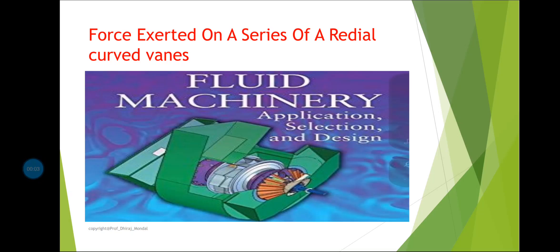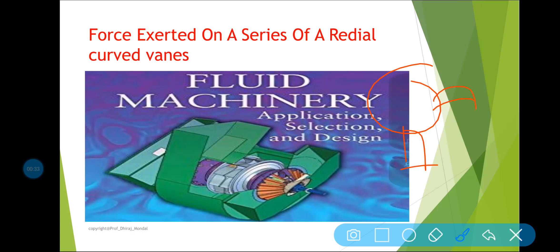Welcome students to this session of fluid machinery. Last class we discussed the forces exerted by a jet on a series of vanes, where we discussed the maximum efficiency of 50% for a series of vanes. We had that rho·a·v is the mass flow rate, into (v minus u) is your Fx, and ultimately work done W equals Fx into u. That was discussed last class.